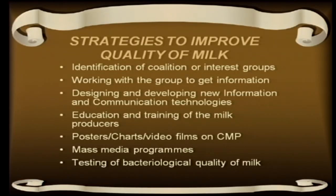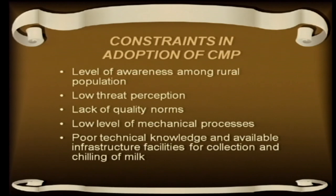What strategies should we adopt? Mainly, we need education and training of farmers. We should put up posters, charts, and video films on clean milk production, and use mass media. We should also test the bacteriological quality of milk. What are the constraints? The level of awareness among rural people is one of the main constraints. There is a lack of quality norms, a low level of mechanized processes in our country, and poor technical knowledge and inadequate infrastructure for collection and chilling of milk.